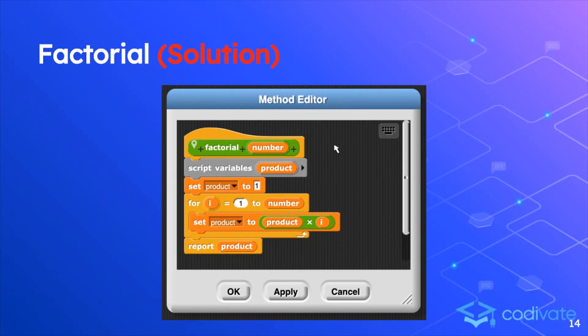This is the solution to the previous exercise. Here we can see that the temporary variable product is created, also known as the script variable. Number is an input in the factorial function. We set product equal to 1. Remember, product is a script variable, so it's temporary. And now we use a for loop to iterate through from 1 to the number itself that was inputted. And we set product equal to product times that number. And at the end, we report product. Take a minute to understand what exactly this function is doing if you did not finish factorial before.